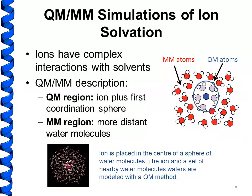One example we've used our CHARM Turbomole code for is simulations of ion solvation. These are very interesting systems for QM/MM methods because ions have very complex interactions with their solvents, and molecular dynamics simulations can give us insight into the nature of these interactions. Because we don't always have good parameters for ion-water interactions, or we would like to validate parameters for molecular mechanical ion-water models, QM/MM methods can provide extra information. We can designate the ion and its first coordination sphere of solvent molecules using a QM model, with remaining water molecules described using a molecular mechanical model.